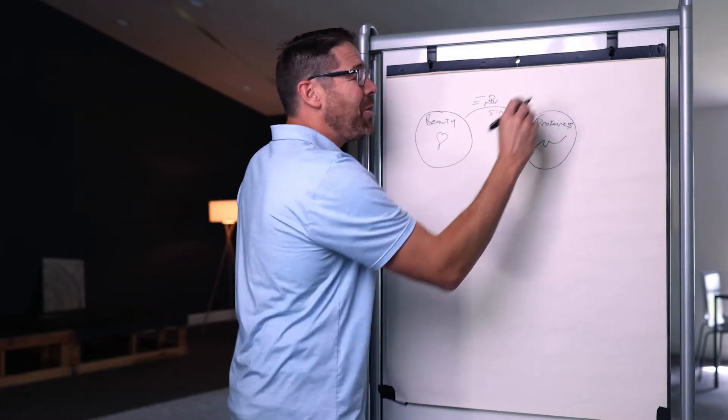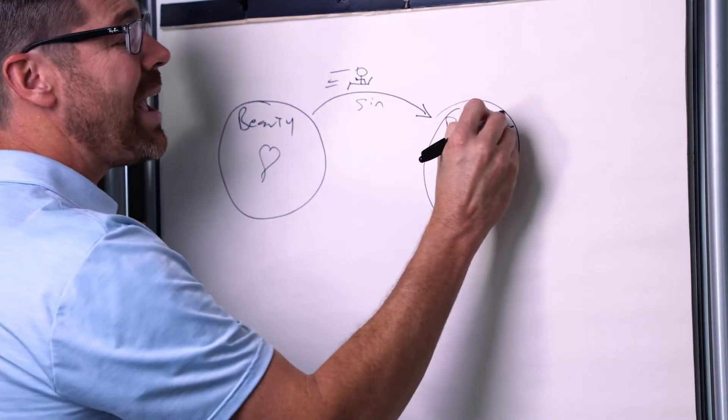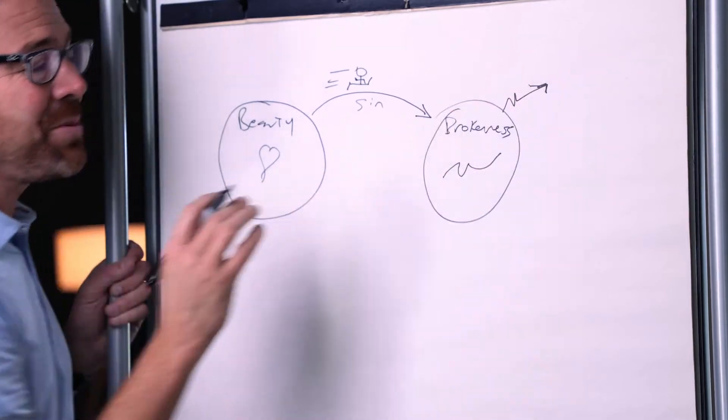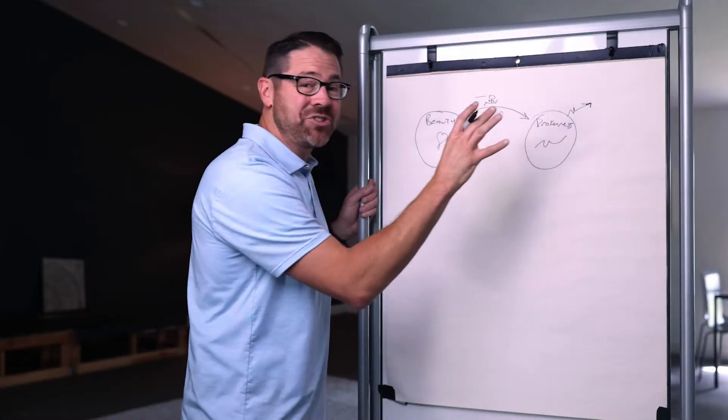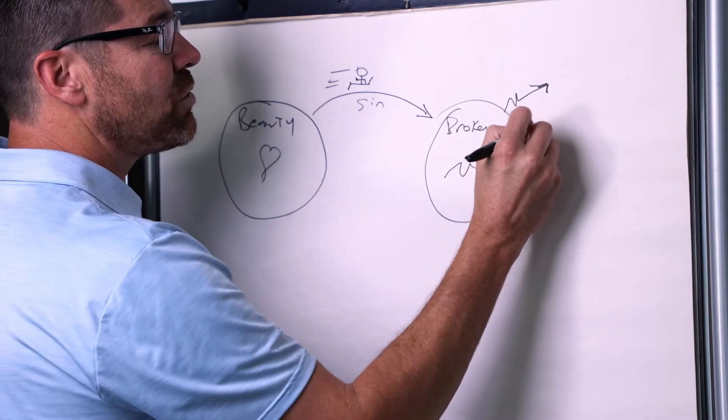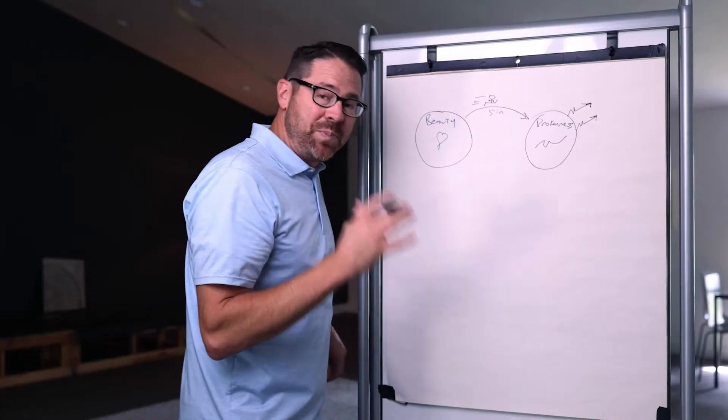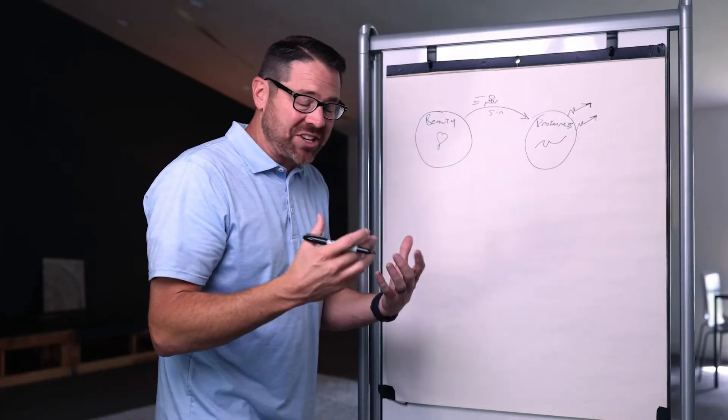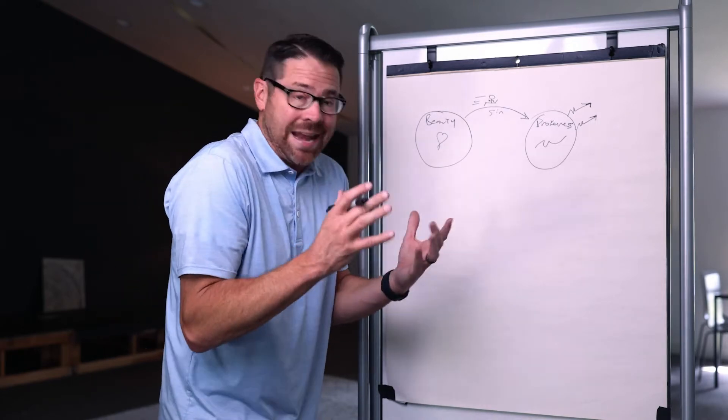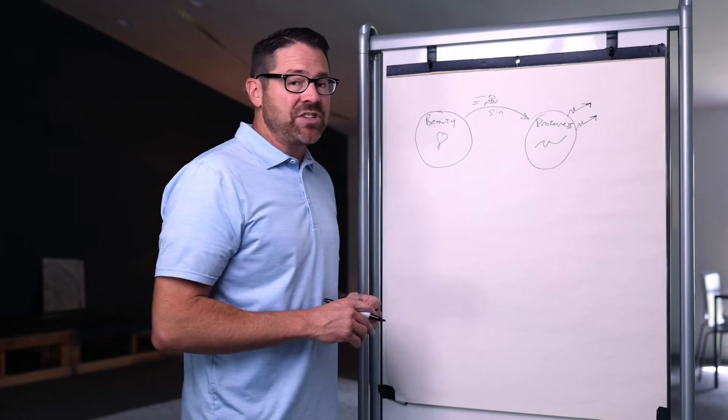And so instead of coming back to God, we try to find our own ways out of brokenness. And so we will do it by pursuing relationships. We'll try to pursue relationships after relationship after relationship to satisfy the brokenness in us. At other times, we try to do it through success, whether it's business success, academic success, athletic success, financial success. We just want to win. And so we will try to find ways out of brokenness.